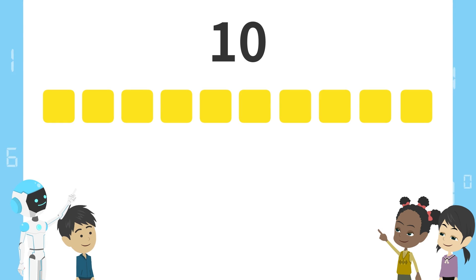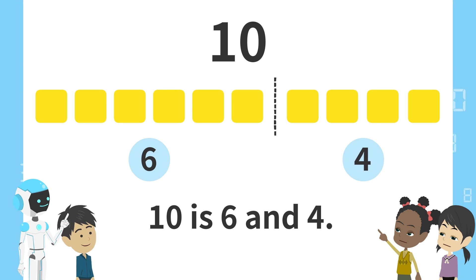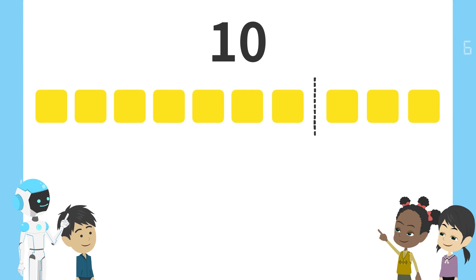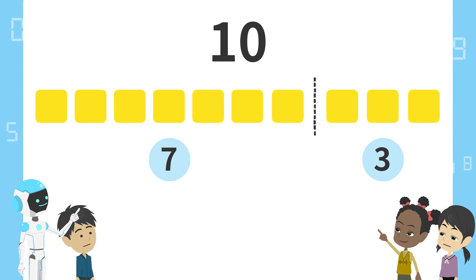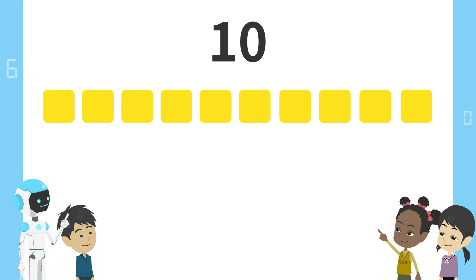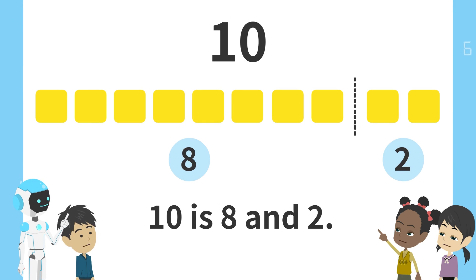Next, here. Six blocks on the left and four blocks on the right. Ten is six and four. Next, here. Seven blocks on the left and three blocks on the right. Ten is seven and three. Next, here. Eight blocks on the left and two blocks on the right. Ten is eight and two.